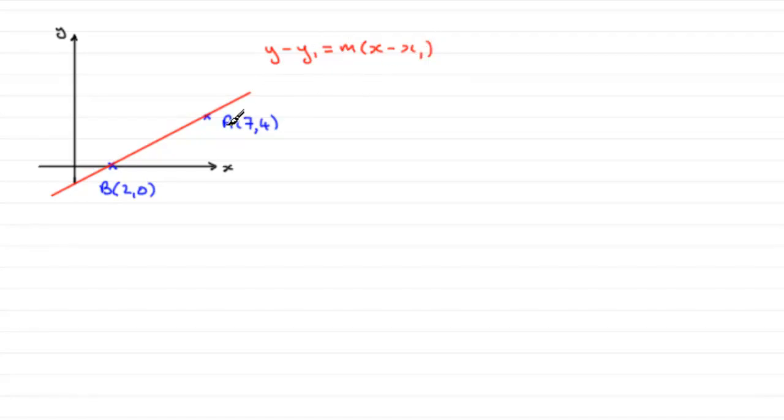And I can either use the coordinates 7, 4 for X1, Y1 or the coordinates for B, 2, 0 as X1, Y1. I would really use B because it seems a lot easier. But anyway, that's how I would do this. There is another way. I'll show you afterwards.